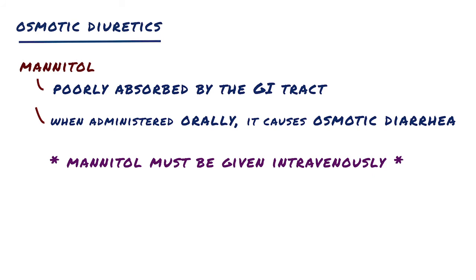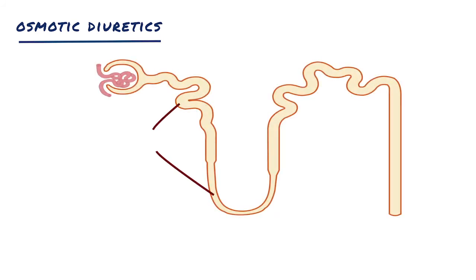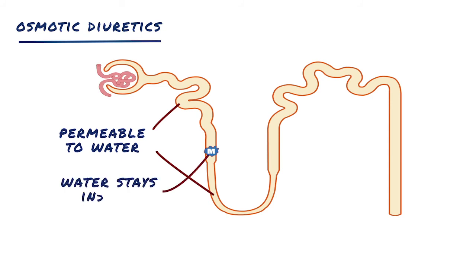Osmotic diuretics have their major effect in the proximal tubule and the descending limb of Henle's loop. These segments are freely permeable to water. Any osmotically active agent that is filtered by the glomerulus but not reabsorbed causes water to be retained in these segments and promotes a water diuresis. The presence of a non-reabsorbable solute such as mannitol prevents the normal absorption of water by interposing a countervailing osmotic force, resulting in increased urine volume.